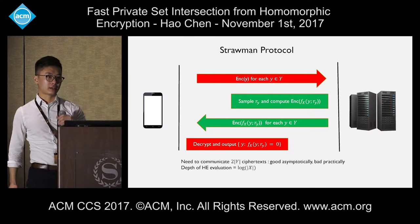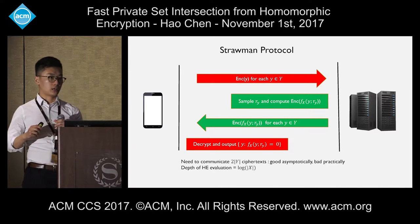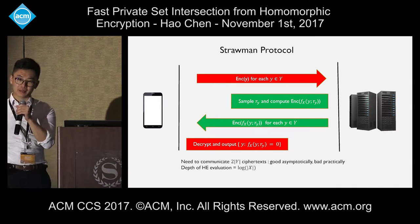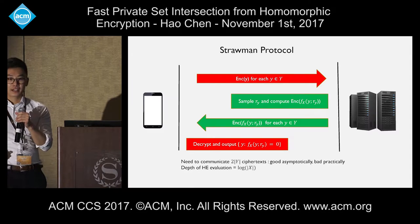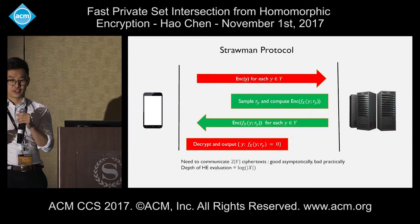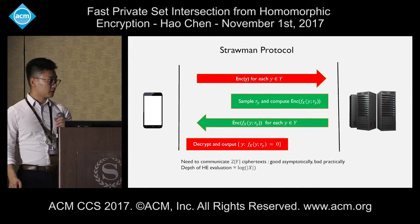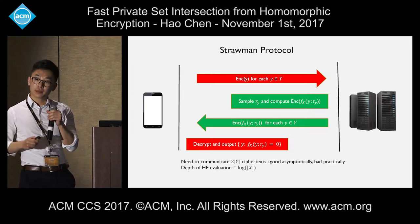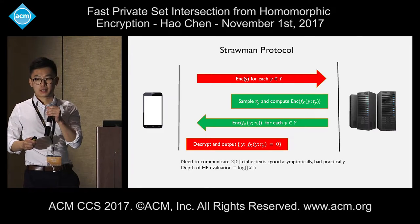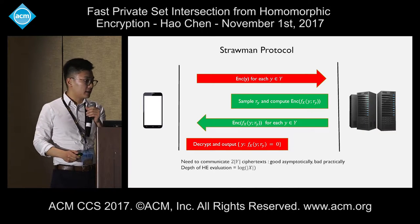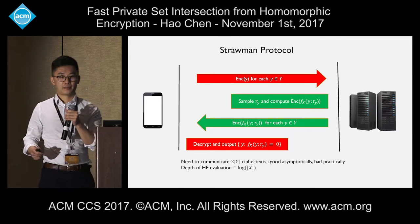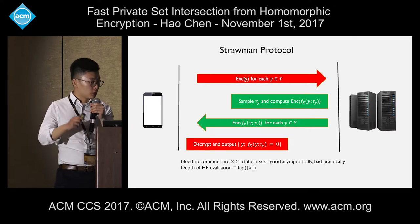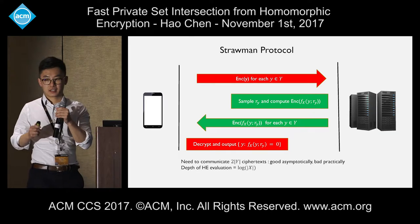I've described our strawman protocol where you need one round of communication for this private set intersection to happen. This is easy because we assume FHE. But in practice, if you implement this strawman protocol, it's not going to be efficient at all. If you implement it directly, you need to send one ciphertext per element of the receiver. If the receiver has about 1,000 elements, you need to send 1,000 ciphertexts. It's asymptotically good but practically very bad because each FHE ciphertext is quite large.